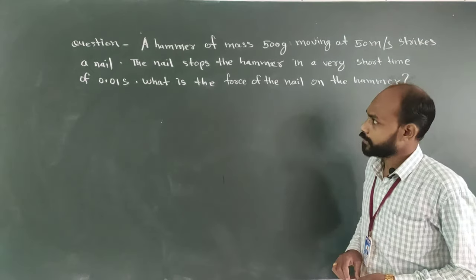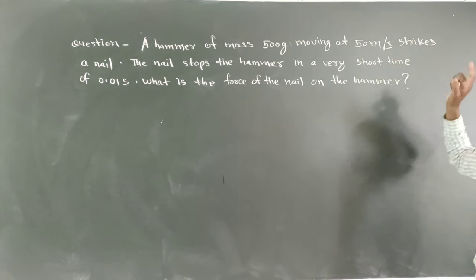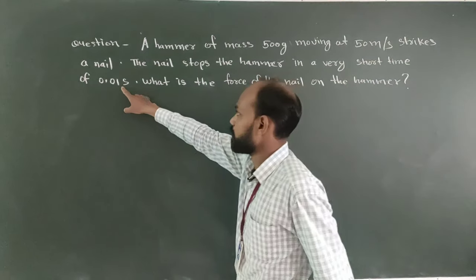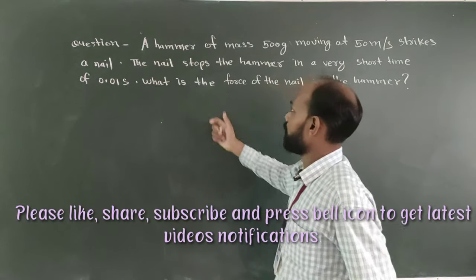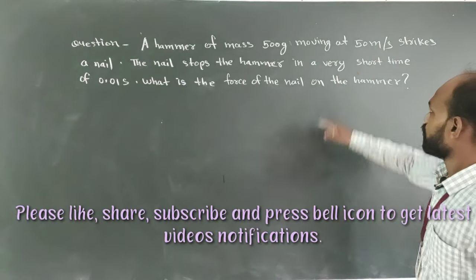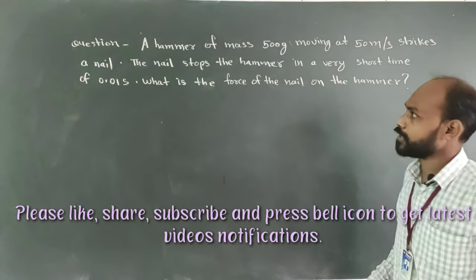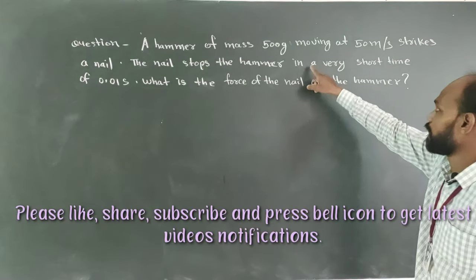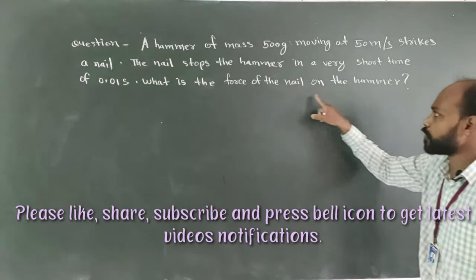One numerical example: a hammer of mass 500 grams is moving at 50 meters per second and strikes a nail. The nail stops the hammer in a very short time of 0.01 second. What is the force of the nail on the hammer?